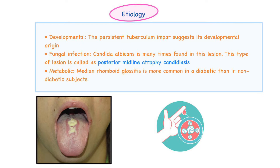The etiological factors for median rhomboid glossitis are: first, the developmental cause — persistence or failure of withdrawal of the tubercular impar before the fusion of the two lateral halves of the tongue. Second, fungal infection — Candida albicans is the fungus mainly attributed to this lesion, and it has been consistently found in biopsies of such lesions.